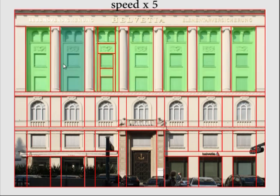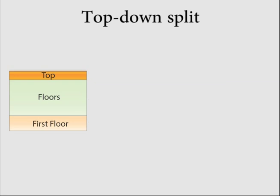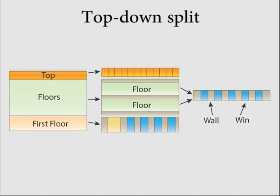We propose an approximate dynamic programming formulation to tackle the smallest grammar problem for the facade layout. The algorithm splits the regions in the facade in a top-down manner, which always leads to a valid grammar.